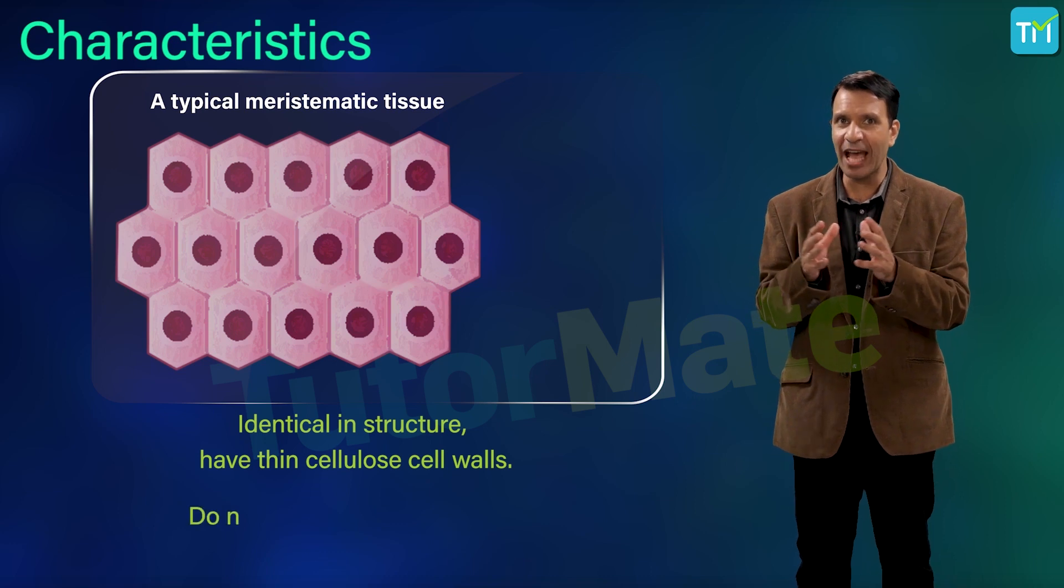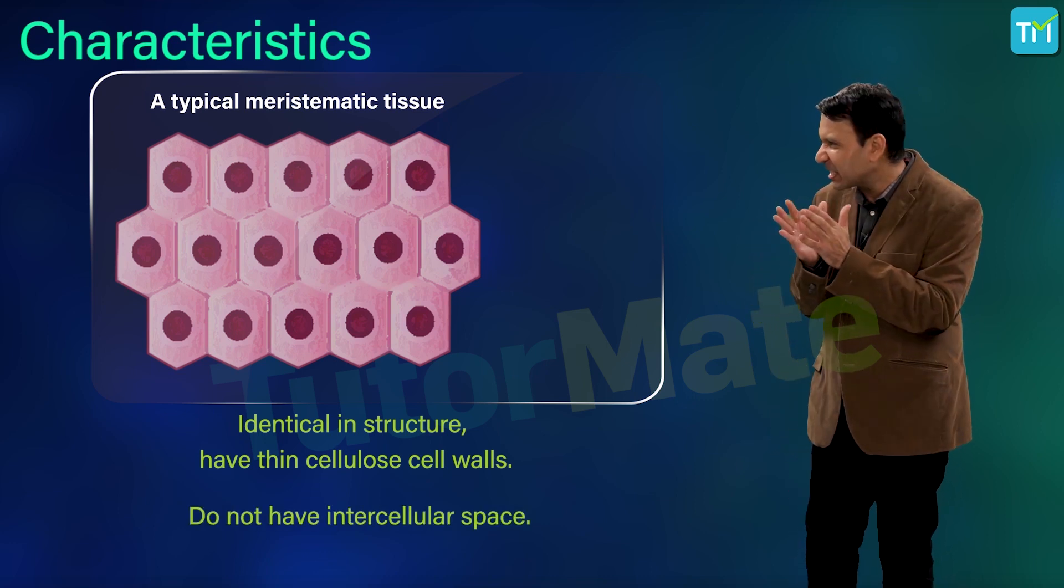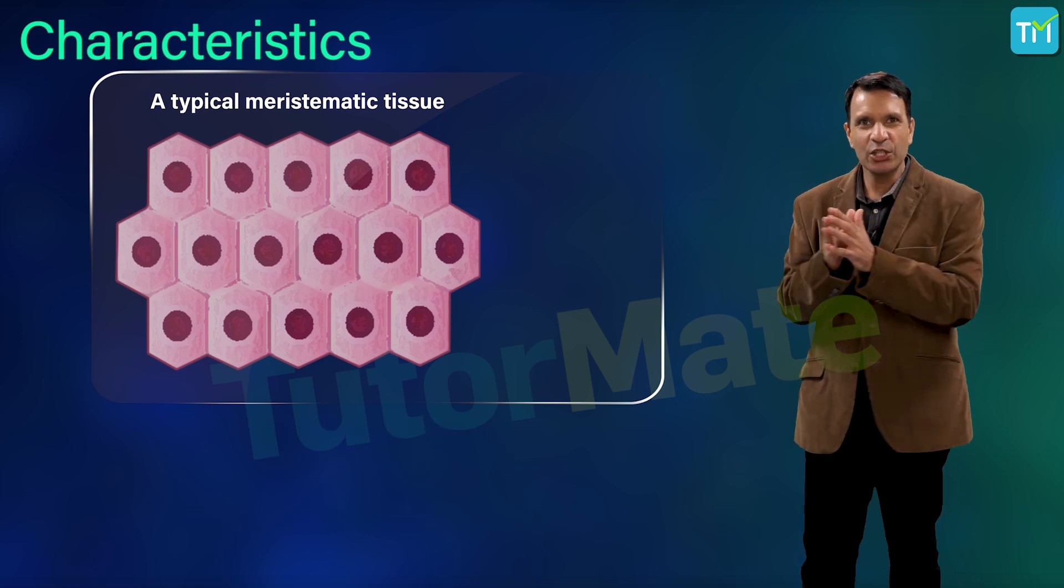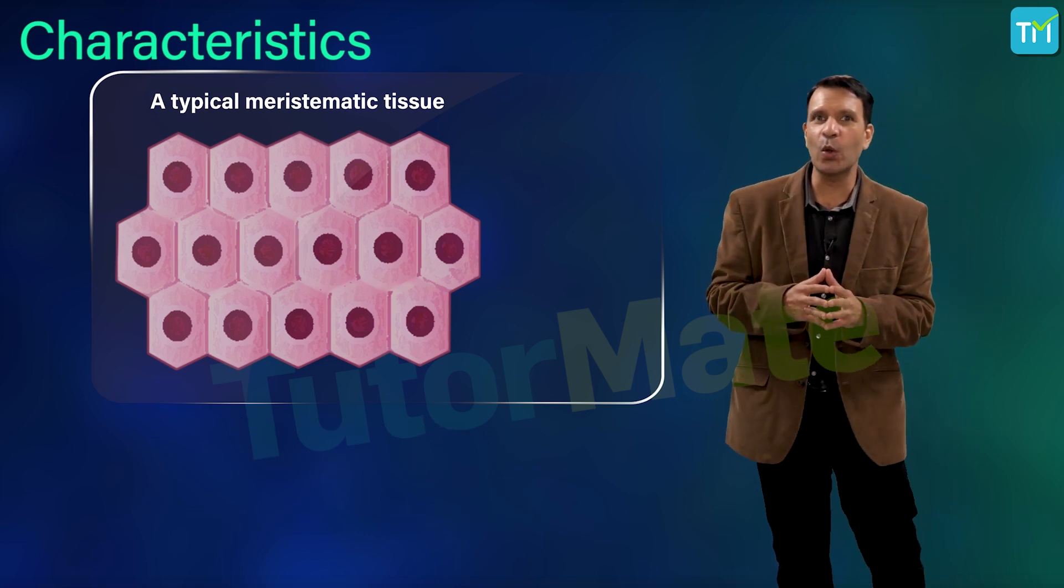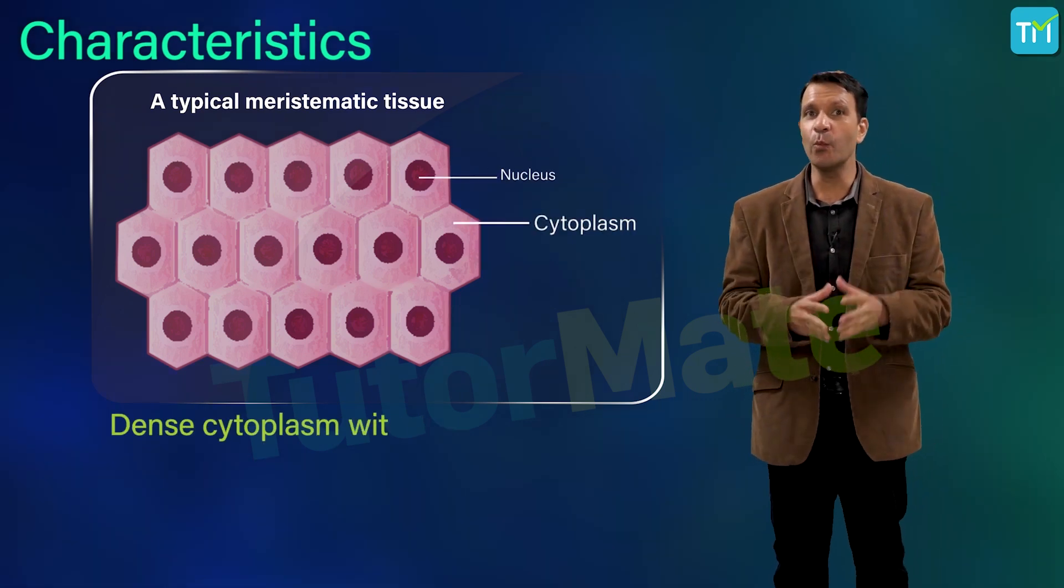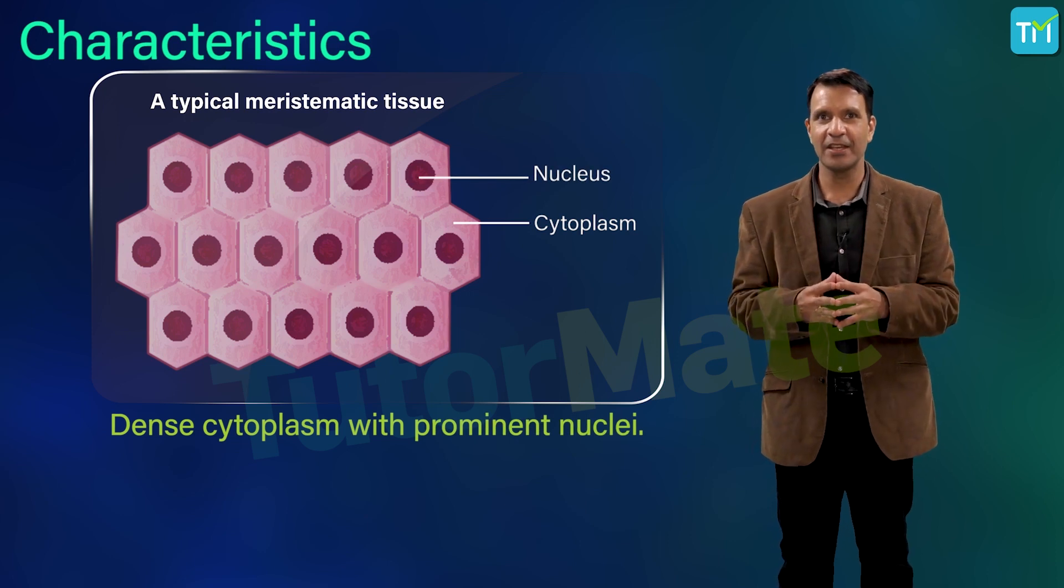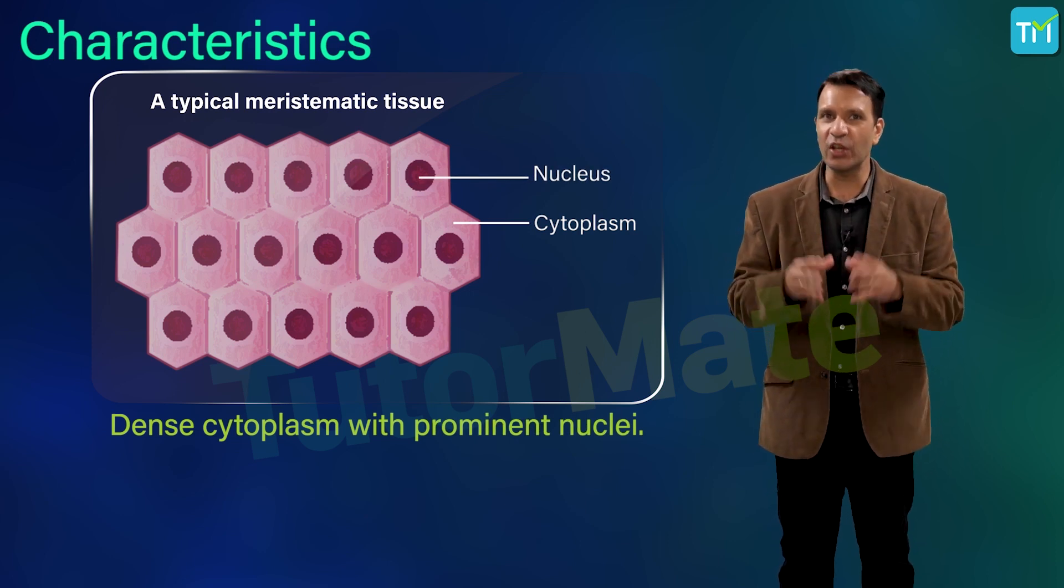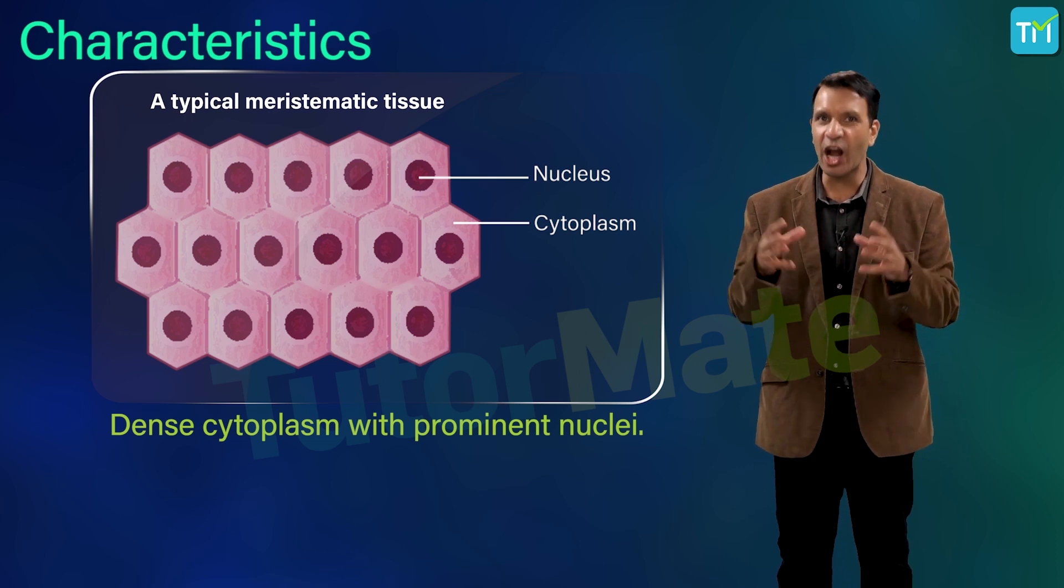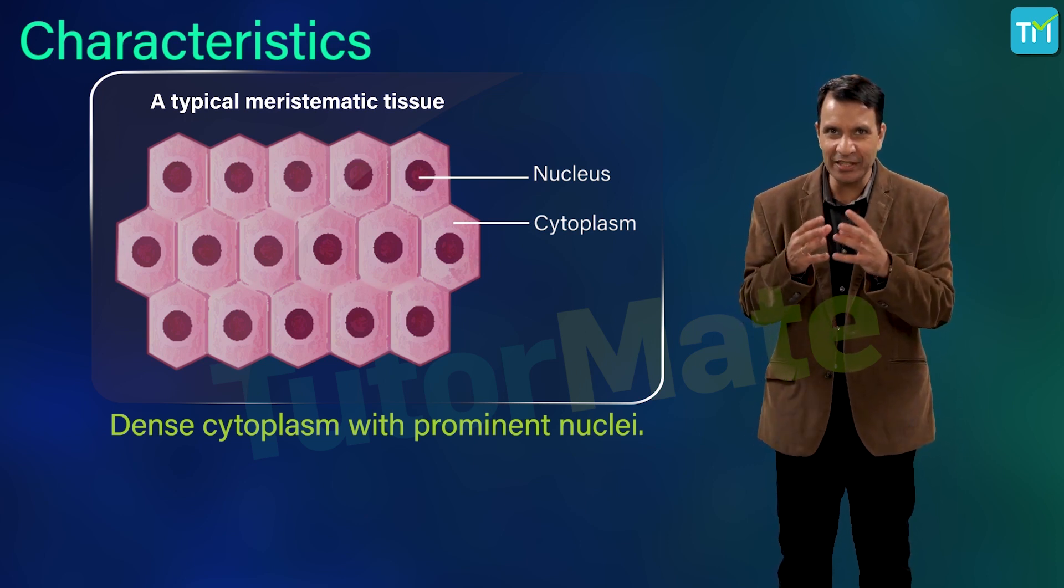The cells of this kind of tissue are compactly arranged and do not have intercellular space—that looks pretty cramped, right? Moving on, these cells also have dense cytoplasm with prominent nuclei. The term dense cytoplasm means the contents of the cytoplasm are close and situated in a compact manner.